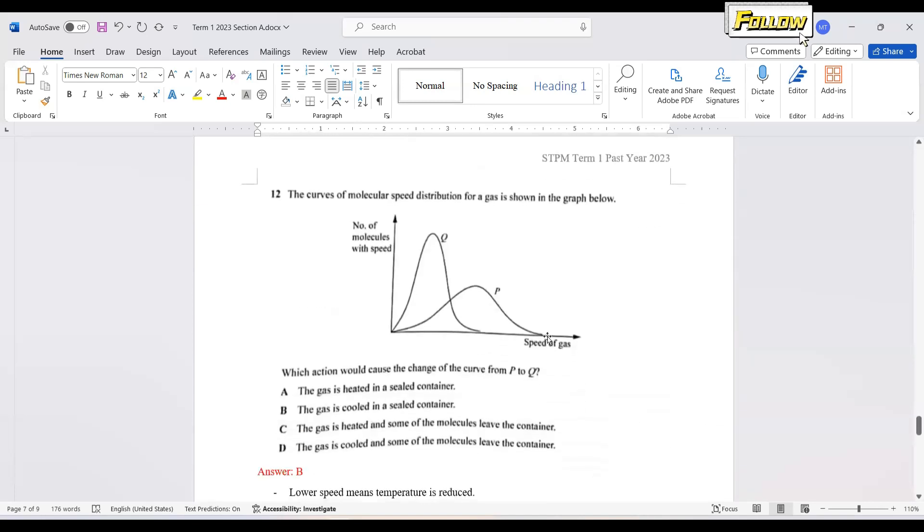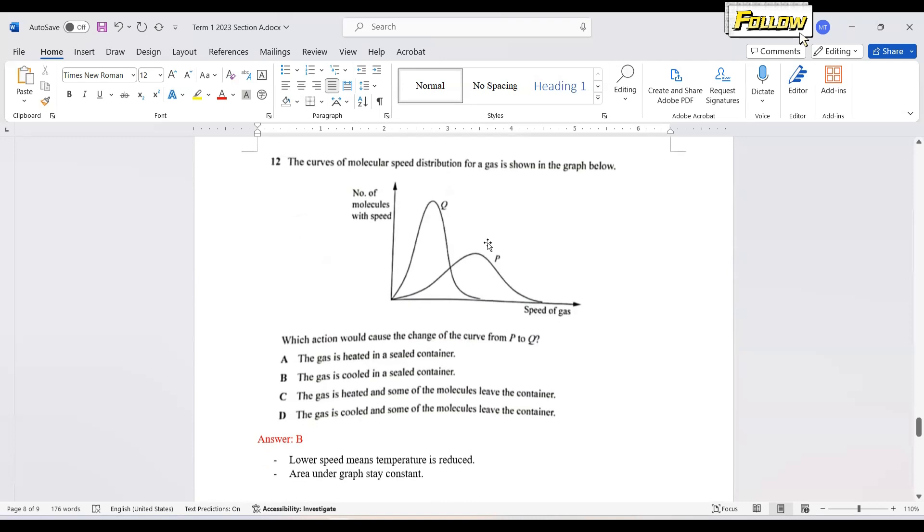We move on to question 12. The curve of molecular speed distribution of the gas is shown in the graph. Which action would cause the change of the curve from P to Q? From P to Q, we can see that the speed of the gas is reduced. Either the peak, the average speed or the root mean square speed, it is reduced. So it means that the temperature is reduced. As for answers C and D, we could see that they mention about molecules, which is leaving the container. The number of molecules is represented by the area under the graph. There's no statement about the area. So we can just assume that the area stays constant. The number of molecules is also constant. Answer would be B.